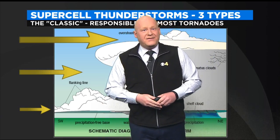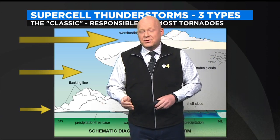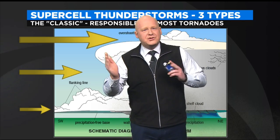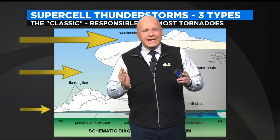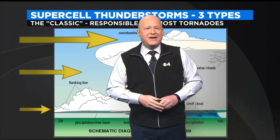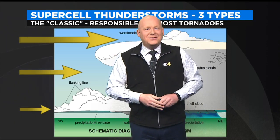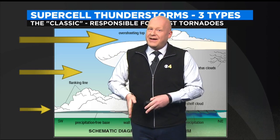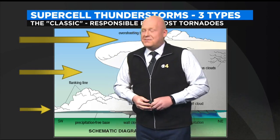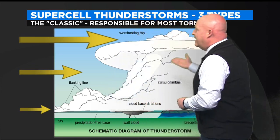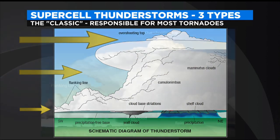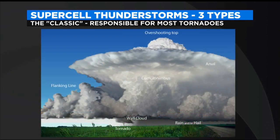So in the ordinary storm, that downdraft sends a gust front out, cuts the updraft off and kills the storm. In a severe storm, because of the wind shear, this thing is rotating and leaning. Therefore, you do not have the downdraft cutting off the updraft, and so this is a much longer lived storm. I'll get out of the way here and we'll show you what one may look like if you see it in nature.